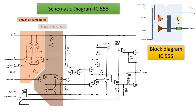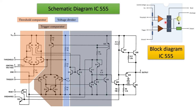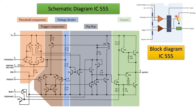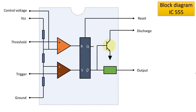The next is the trigger comparator, which you can see here. There is a voltage dividing network of three 5kΩ resistors. Finally there is a flip-flop, output stage, and discharge transistor — all of which you can see in the block diagram of IC555. Now let's understand IC555 through its block diagram.